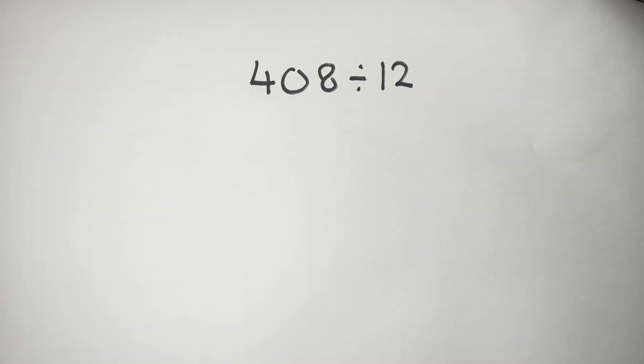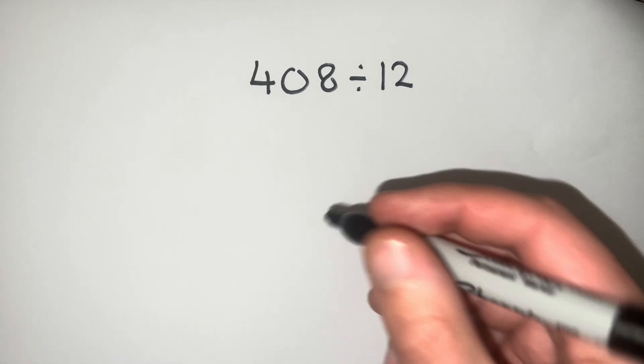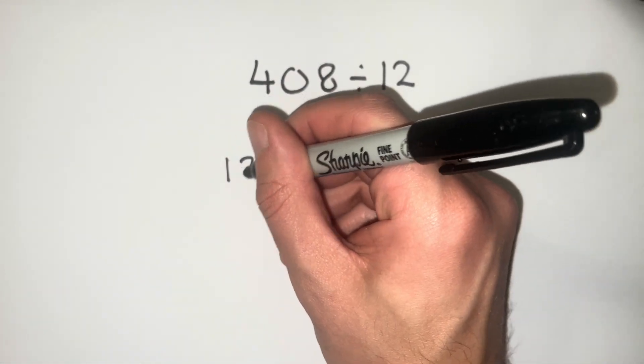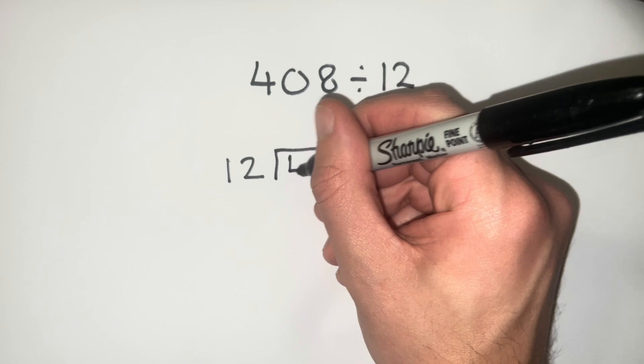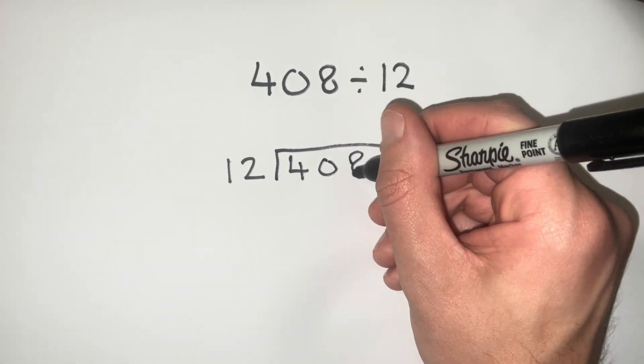Another example we can do is 408 divided by 12. So this time we put our 12 on the outside of the bus stop, draw our bus stop in, and write in 408.